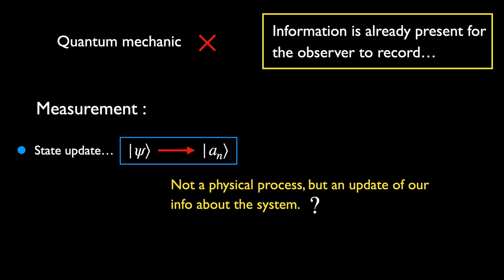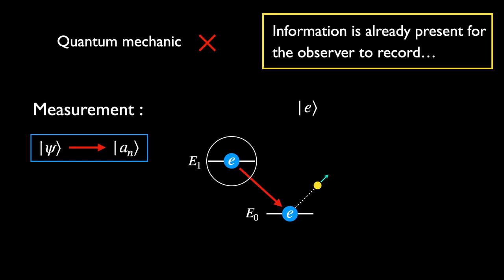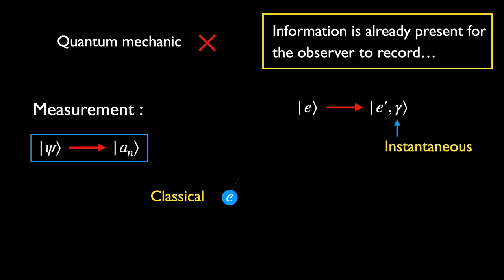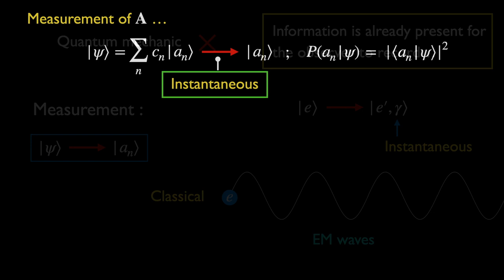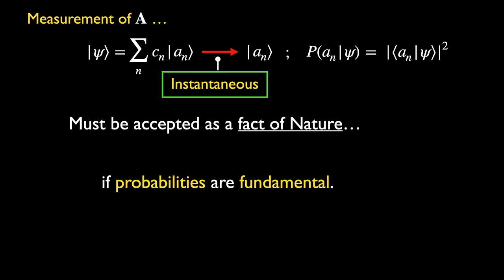But even if we have to accept the instantaneous collapse of the wave function as a fact of nature, there seems to be no actual problem. Such events are everywhere in the quantum realm. Take the example of the emission of a photon by an electron as it transits from an excited state to the ground state within an atom. Initially there is only the electron; in the next instant, a photon appears — this is instantaneous. A more serious problem arises if we consider quantum mechanics to be a universal theory, meaning it has to apply to objects of all scales, not just particles. This includes the measuring apparatus and even the observer, as well as everything else in the environment.